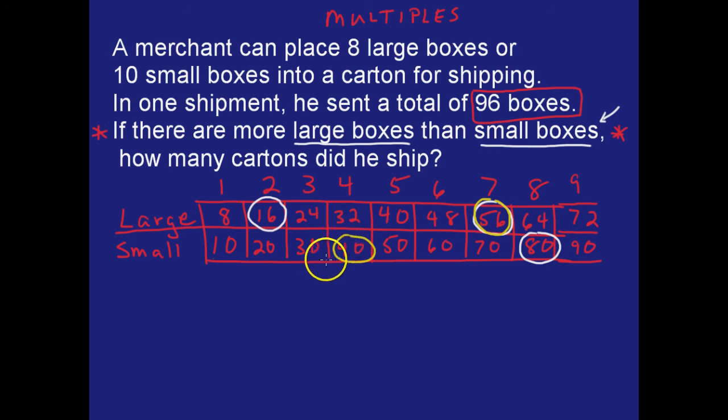And so the math again would look like this: 8 large boxes times 7 cartons would get you 56 boxes. And then for the small, 10 boxes for every 4 cartons, and that would give us 40 boxes, and that would total 96 boxes.